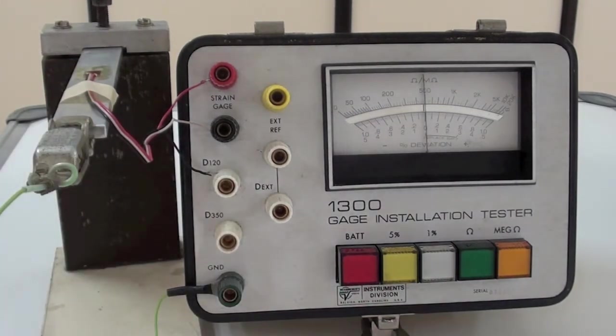For a good gauge installation, this should be as high as possible, preferably more than 10,000 megaohms.